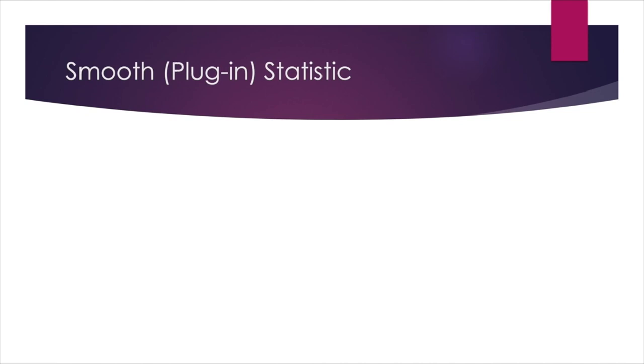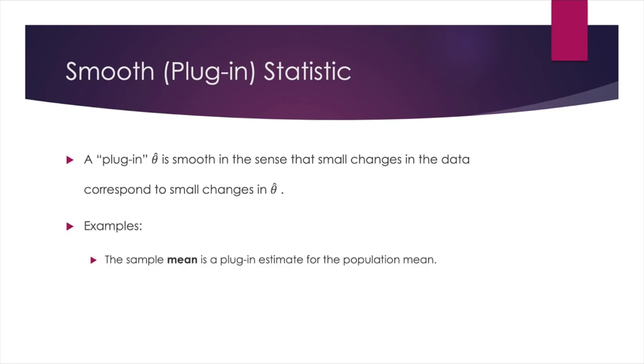A plug-in theta hat is smooth in the sense that small changes in the data correspond to small changes in theta hat. For instance, the sample mean is the plug-in estimate for the population mean, but the sample median is not a plug-in estimate for the population median. Because it is not smooth, a small change in theta could result in a big change in the sample median.